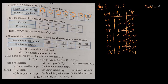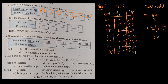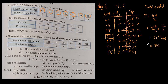n=41 is odd. For odd n, the formula for median is (n+1)/2 = (41+1)/2 = 42/2 = 21st observation. So we need the 21st observation. Is it in cumulative frequency 19? No. Is it in 28? Yes. The 21st observation falls in the group corresponding to weight 50. So the median is 50.